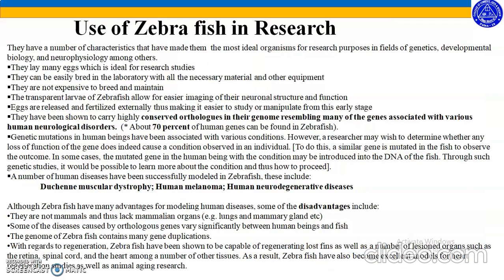So, why is zebrafish used so much in research? They have a number of characteristics that make them the most ideal organism for research purposes in genetics, developmental biology, and neurophysiology, among others. They lay many eggs, which is ideal for research studies. They can be easily bred in the laboratory and are not expensive to breed. The transparent larva allows for easier imaging of their neuronal structure and function. Eggs are released and fertilized externally, making it easier to study or manipulate. From this early stage, they carry highly conserved orthologs in their genome, resembling many genes associated with various human neurological disorders.